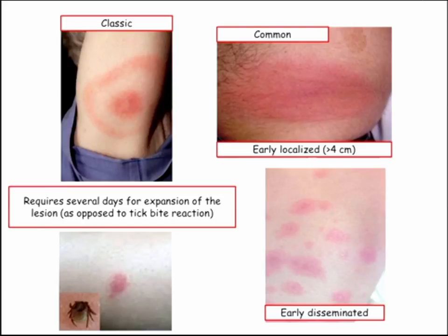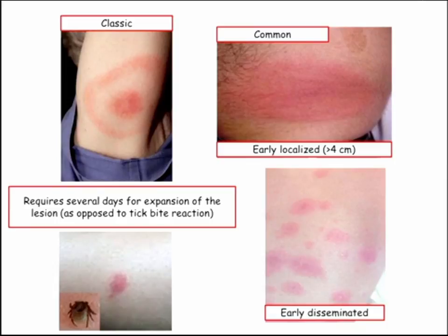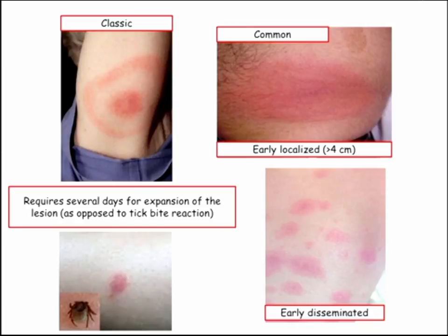Here are the pictures. Everybody knows about the target rash — that's classic, but it's less frequently seen. What people actually come in with is this big confluent erythrodermic rash. This is early localized — in the groin, behind the knee — but it's big, not subtle, it's warm, and greater than four centimeters. Then on the skin in early disseminated disease, people come in with multiple lesions all over their body — that's already disseminated disease.